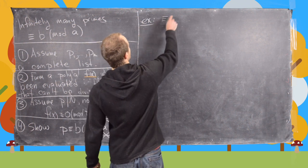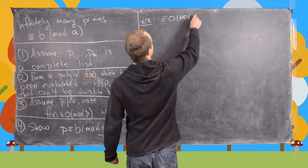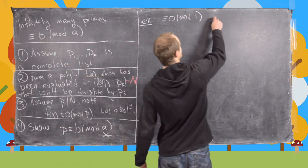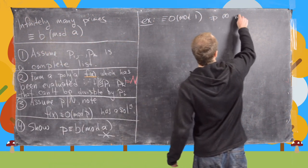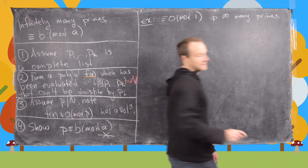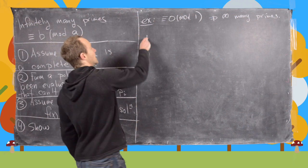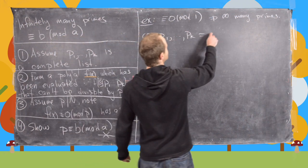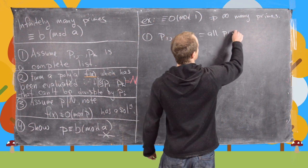So let's say congruent to 0 mod 1. So this is silly but this is the same thing as just like infinitely many primes. So again step one is you assume that this is all primes, the list P1 to PK.